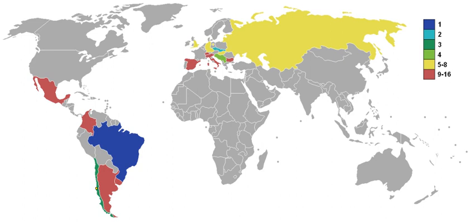A total of 56 teams entered the 1962 FIFA World Cup qualification rounds, competing for a total of 16 spots in the final tournament. Chile, as the hosts, and Brazil, as the defending champions, qualified automatically, leaving 14 spots open for competition.